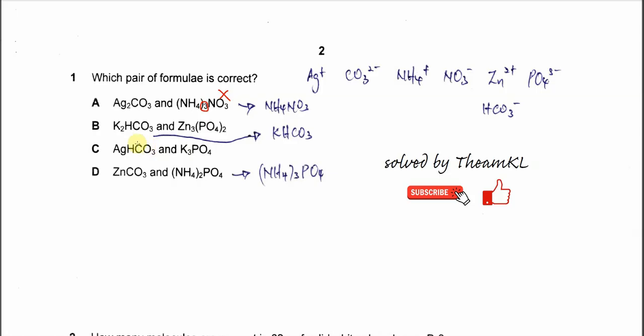For B, this should be KHCO3 because hydrogen carbonate is just negative, so it needs only one potassium ion, not two. This is wrong, so this is not the answer. For the second formula, the zinc phosphate is correct.